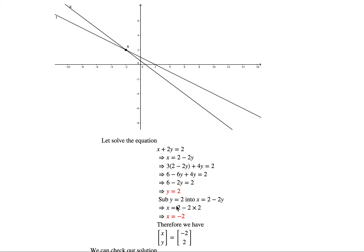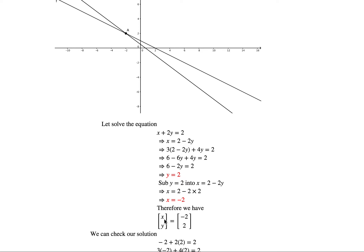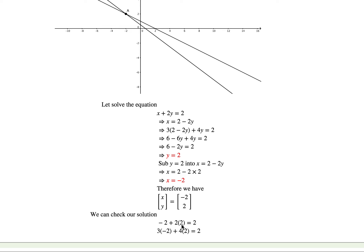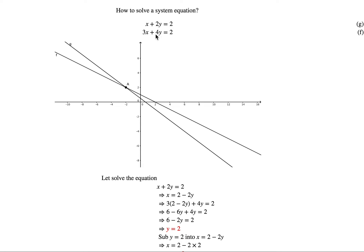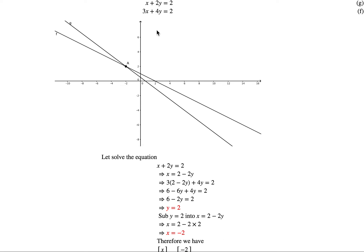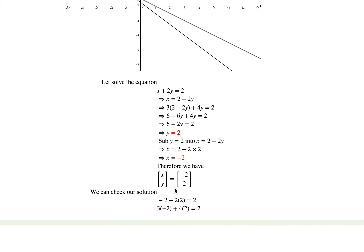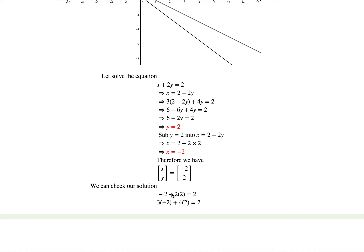So the solution is x equal to minus 2 and y equal to 2. To verify, we substitute the solution into the original equations. With x equal to minus 2 and y equal to 2, we check that both sides are equal for both equations — and they are. Thank you for watching.